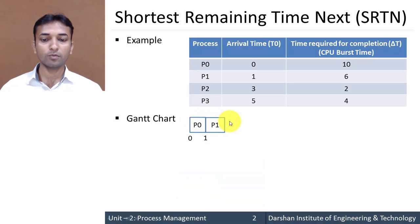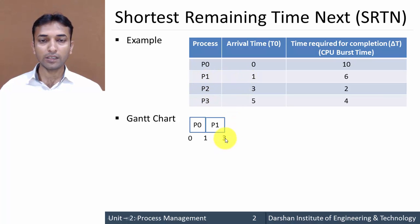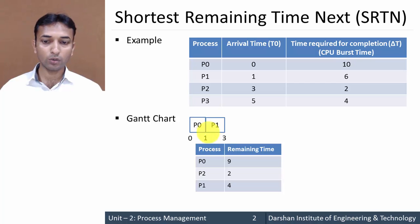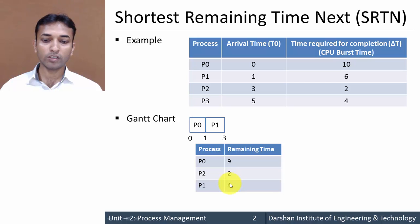At three milliseconds, a new process P2 arrives. P1 has been executing from one to three milliseconds. Now there are three processes in the queue: P0 still requires nine milliseconds, P2 is a new process requiring two milliseconds, and P1 has already executed two of its six milliseconds so four milliseconds remain. Out of these three processes, P2 requires the least time to complete its execution.